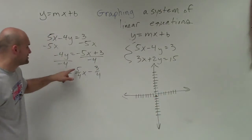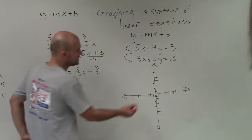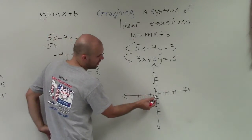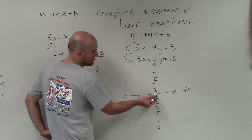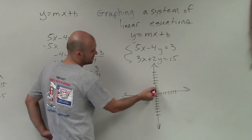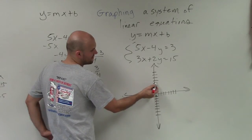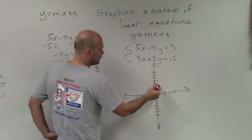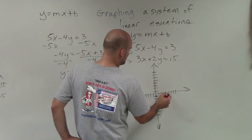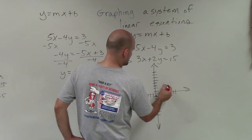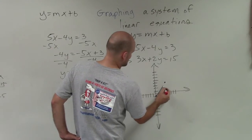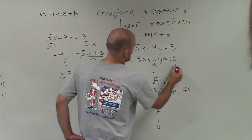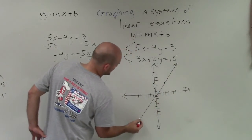For the slope of 5 over 4, I need to go up 5 units and then over 4. So I go up 5: 1, 2, 3, 4, 5 — then over 4: 1, 2, 3, 4. And that's going to be that first equation graphed.